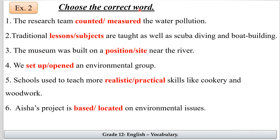Exercise two: choose the correct word. The research team counted or measured water pollution — we can't count pollution, so the answer is 'measured.' Number two: traditional lessons — subjects are taught as well as scuba diving and boat building. These are areas of study, so the answer is 'subjects.' Number three: the museum was built on a position or a site. A site is a place where a building was built, like a building site. Position refers to a place in relation to other places, like on a map. So the answer is 'site.'